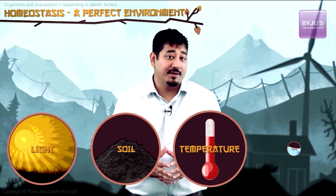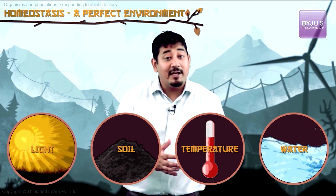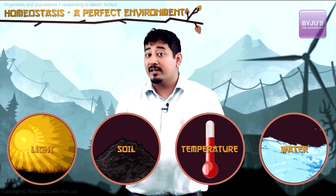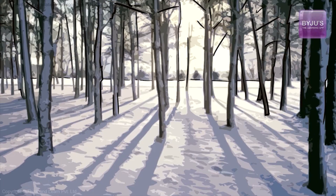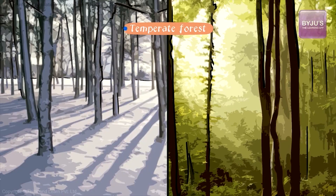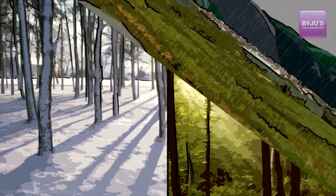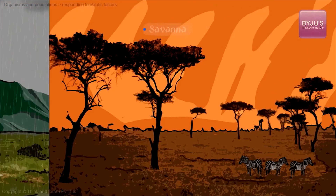We've learnt all about the various abiotic factors, and we know that these factors vary greatly over time and over region. It could go from a freezing winter to a humid summer in the temperate forest, or from heavy rains to dry heat in the savannah.